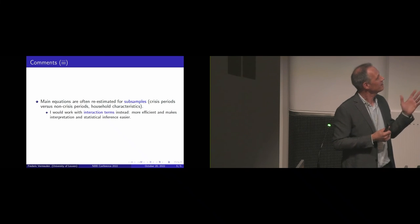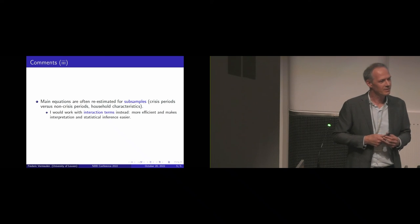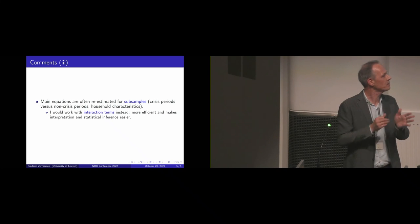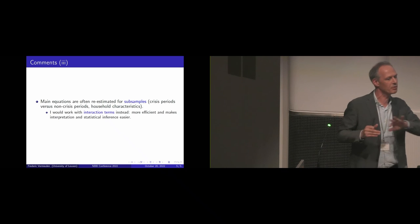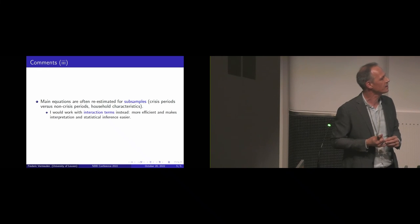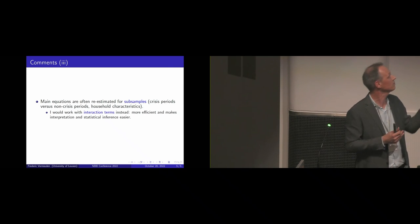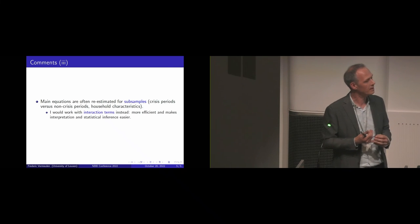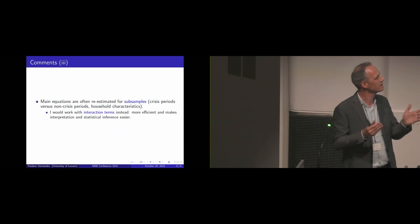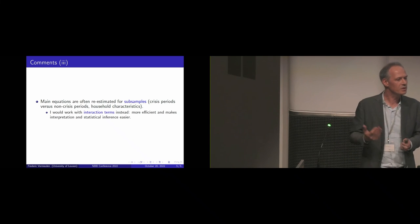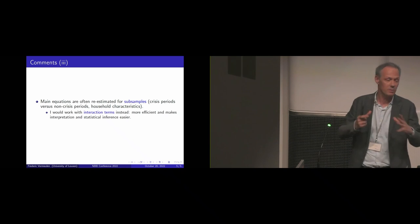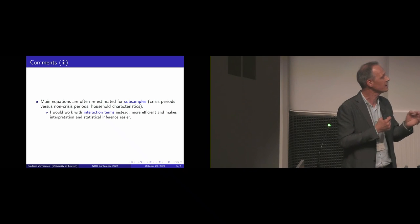Then maybe a technical comment. In many of the estimations you re-estimate the model for subsamples. For example, crisis periods versus non-crisis periods, extensive versus intensive margin. Also sometimes depending on household characteristics. So lowly educated, highly educated. I think a more efficient way would be to keep all the observations together and work with interaction terms.